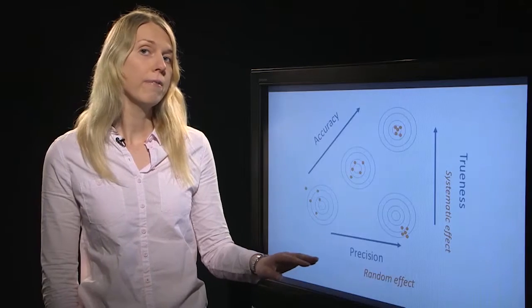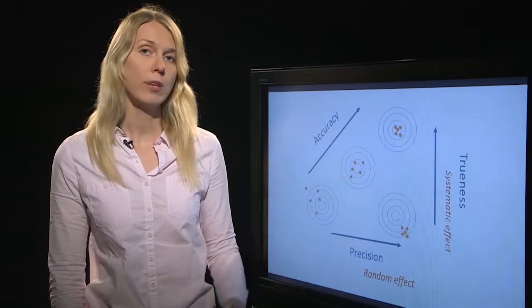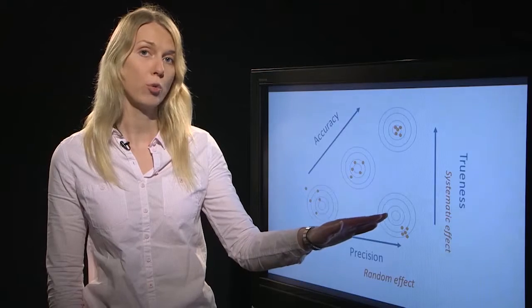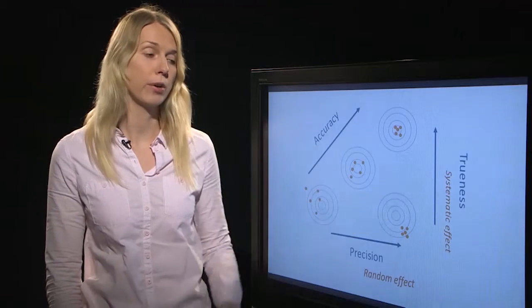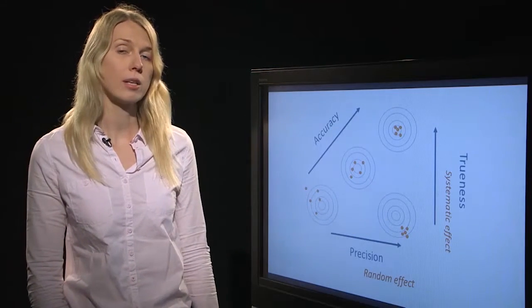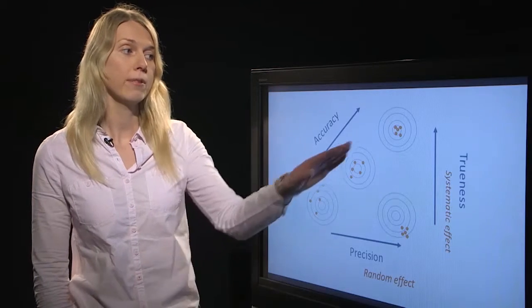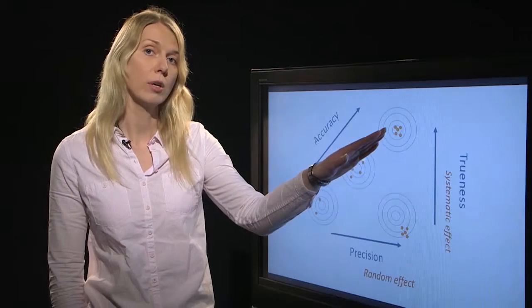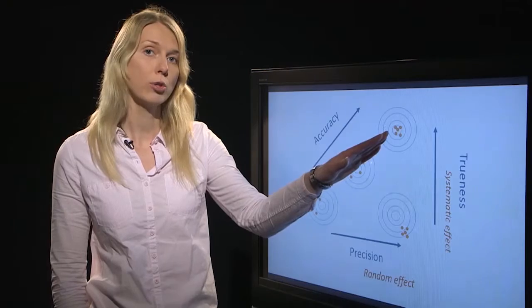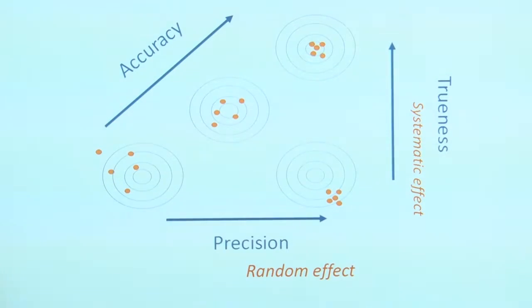However, if the mean of these measurement results is quite far away from the true value, the center of the dartboard, then the method has low trueness. But if the mean results are close to the true value, then the method has high trueness.